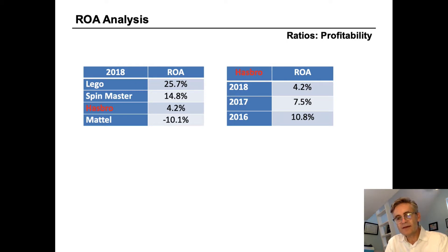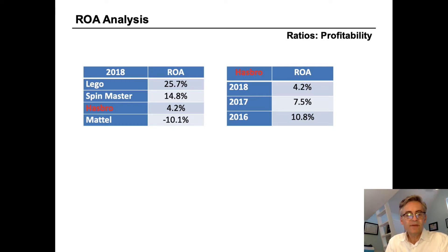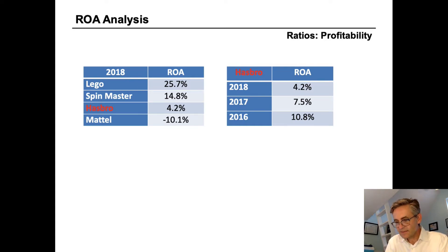On the right-hand side, we can see what's been happening over time. Hasbro's return on assets used to be much better — over 10% in 2016 — and it's been deteriorating each year since.